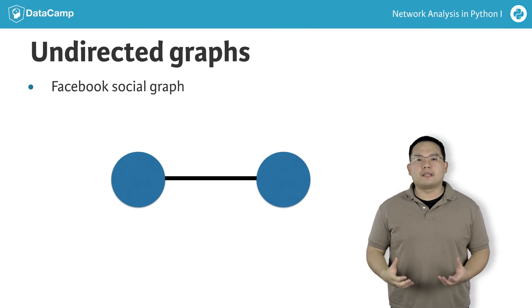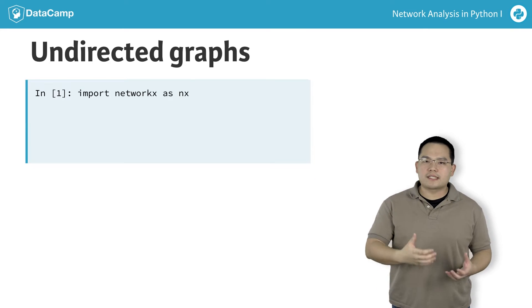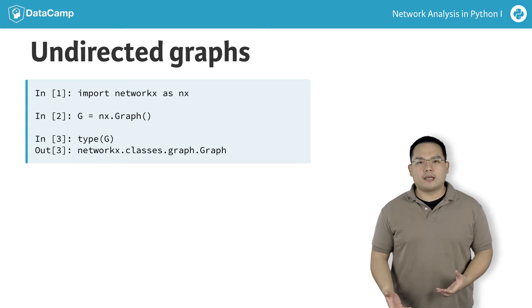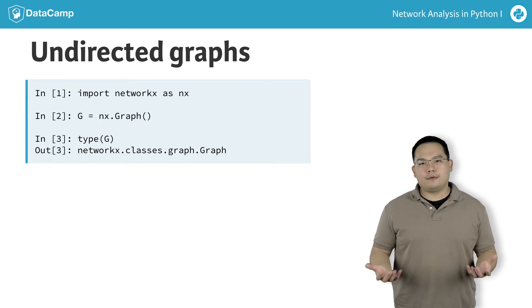If we explore this in the IPython terminal, you can instantiate an empty graph in NetworkX using nx.graph and ask for its type. Undirected graphs have the type graph.